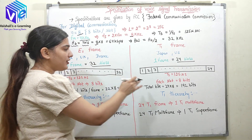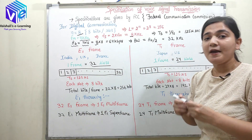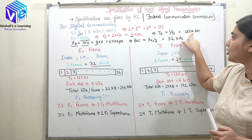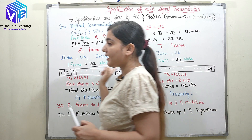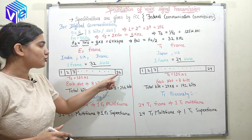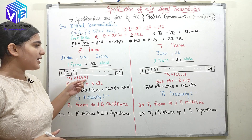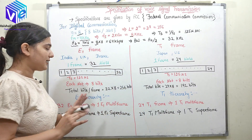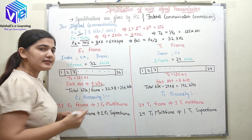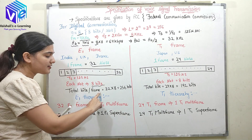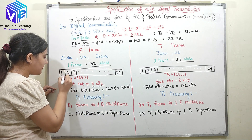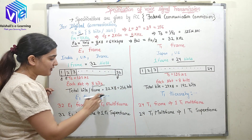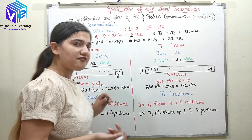The sampling time TS is fixed at 125 microseconds. So in an E1 frame, 32 slots are sent in 125 microseconds, and in a T1 frame, 24 slots are sent in 125 microseconds. Each slot contains 8 bits, so total bits per E1 frame = 8 × 32 = 256 bits.